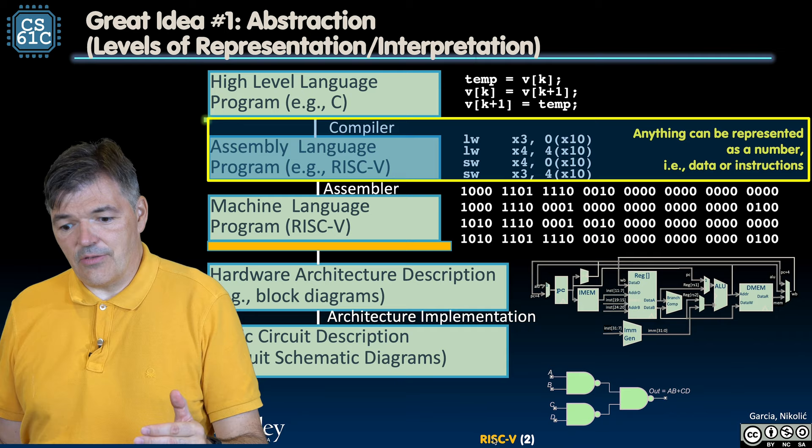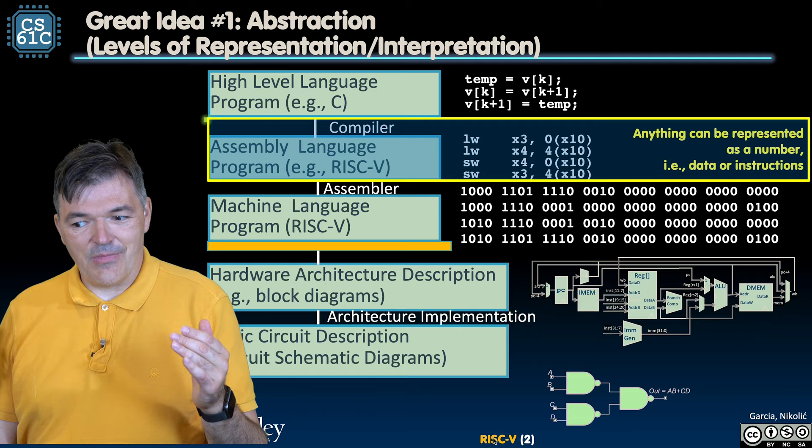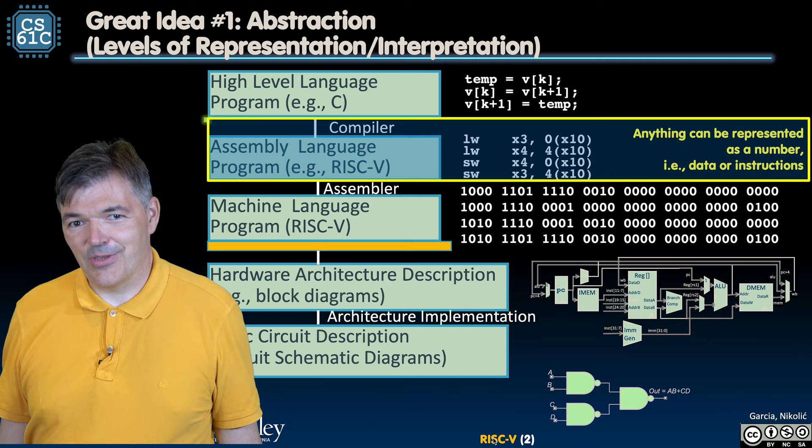Logic gates are not the very bottom of the compute stack — they're also an abstraction. They're built out of transistors. Transistors are also an abstraction of different kinds of materials. There are also wires and all of them are there to carry electrons and holes, and we can talk about even deeper layers of abstraction than that.